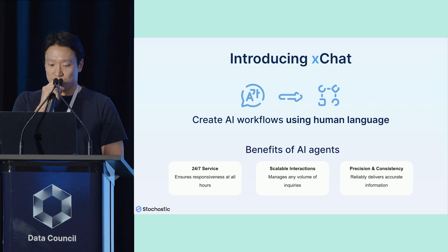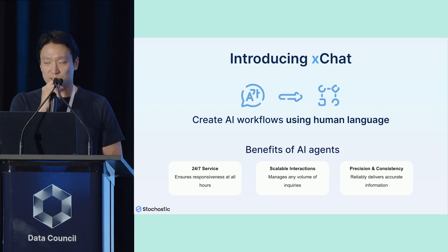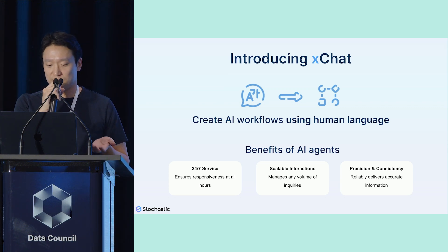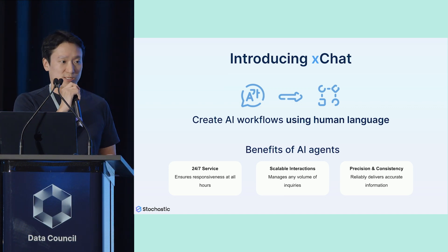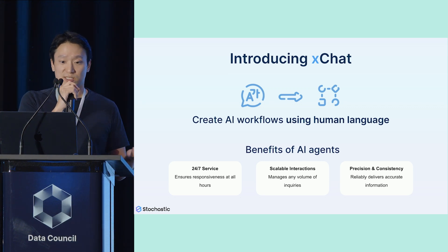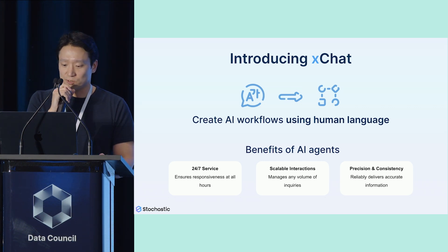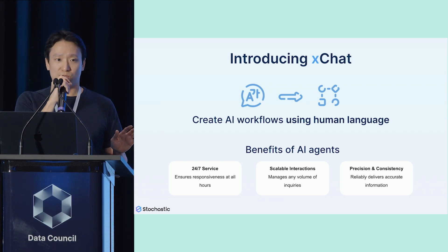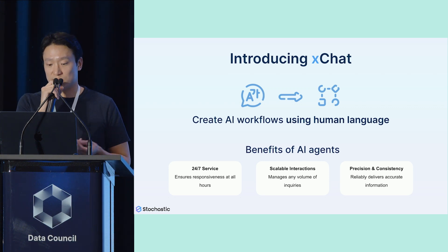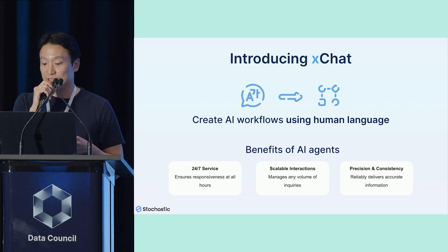I'm going to focus on how we tackle this problem by creating intelligent workflows using human language. AI agents are great because once you have them in production, you can have these agents handle customer support requests 24/7 instead of humans having to stay up late to handle tickets. They also allow you to scale to a large number of requests, since humans obviously cannot multitask as well as machines, and being able to handle a large number of requests simultaneously is a huge advantage.